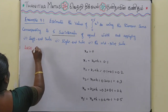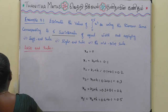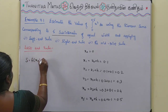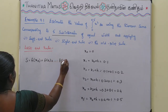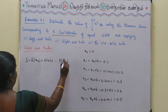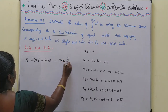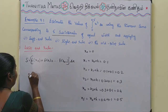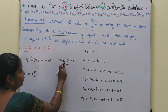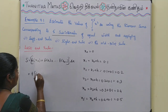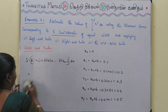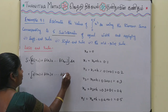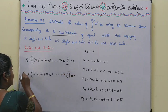For the left-end rule, the formula is S = [f(x0) + f(x1) + ... + f(x_{n-1})] × delta x. Since n = 5, we sum from f(x0) up to f(x4), then multiply by delta x.